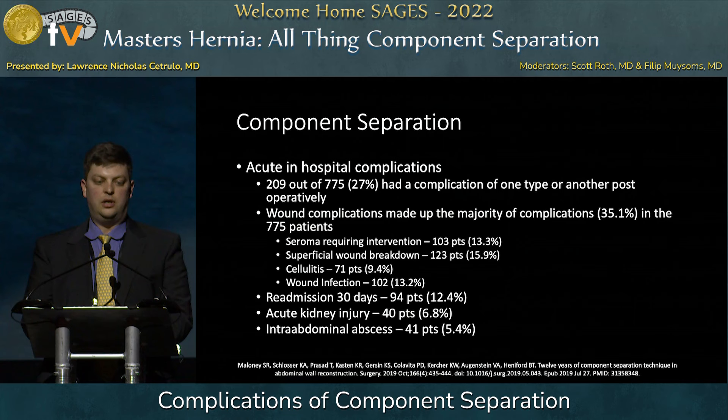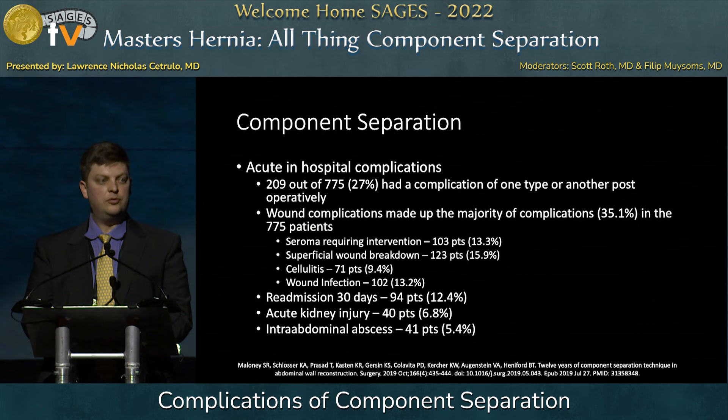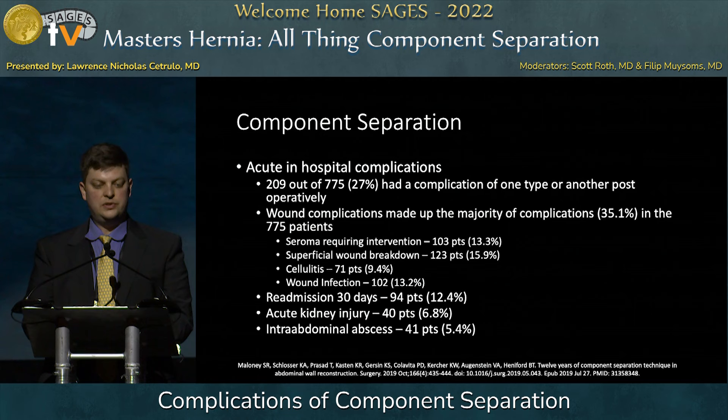This is a study from Carolinas. They looked at 775 patients and found that the incidence of any complication in anybody getting a component separation was 27% — so one in four patients is going to get some type of complication. The majority of these are wound complications, at about 35% of patients. You can see the various types listed: readmission rates, acute kidney injury, intra-abdominal abscesses — all standard post-operative complications.